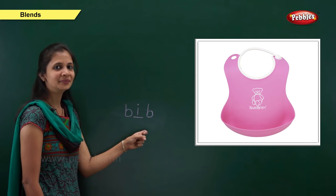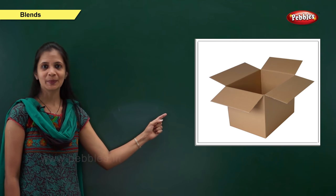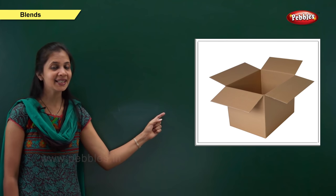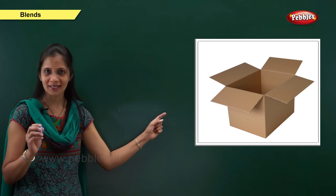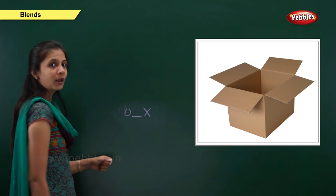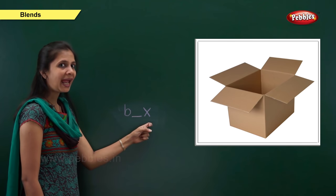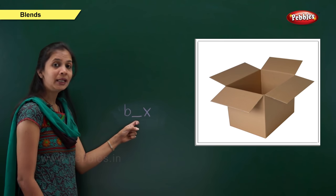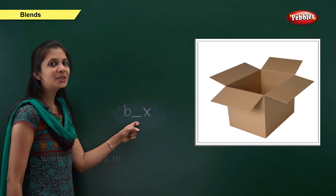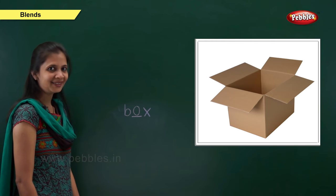Next one. Which picture is this? Yes, it is box. Now, what is the sound of this word? It is b, o, x — box. When the beginning sound is 'b', the letter is b. When the ending sound is 'x', the letter is x. What is the middle sound? It is o. The vowel o says 'o'. Okay.